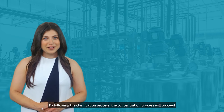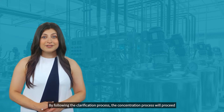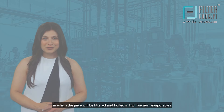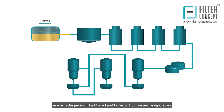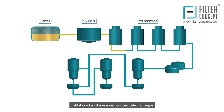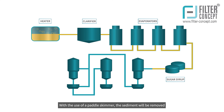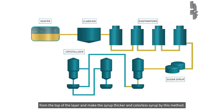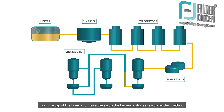Following the clarification process, the concentration process will proceed, in which the juice will be filtered and boiled in high vacuum evaporators until it reaches the relevant concentration of sugar, and then the sugar syrup boils at a lower temperature. With the use of a paddle skimmer, the sediment will be removed from the top of the layer, making the syrup thicker and colorless.